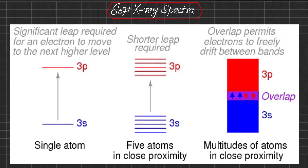One other difference is that in a single atom there is a large gap between 3s and 3p. However, as the number of atoms increases, the gap reduces. In a mole or multitude of atoms, the two regions are so close to each other that electrons can freely move from 3s to 3p because of the overlapping of these two orbitals. All this discussion was theoretical with no practical evidence for band theory.